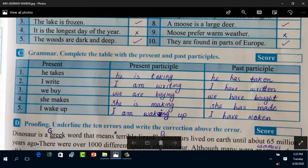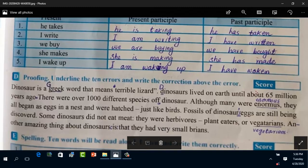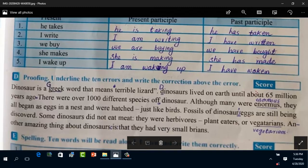Question number C is grammar: complete the table with the present and past participle. I have already done this in the table. This work has been done in the table, just read it and try to understand. Question number D, proofreading: underline the ten errors and write the correction above the error. This work has also been done, mistakes are being pointed out. You have to read it thoroughly. Write the exercise work in your rough notebook and try to learn it. Thank you.